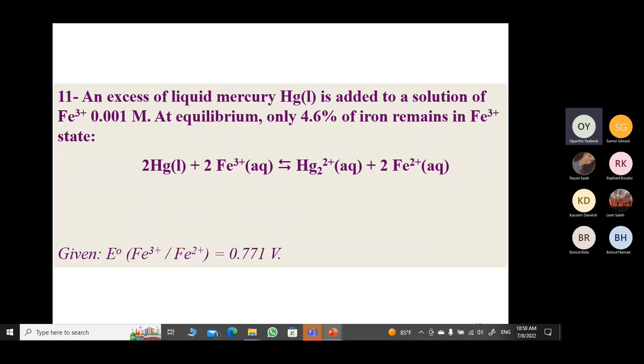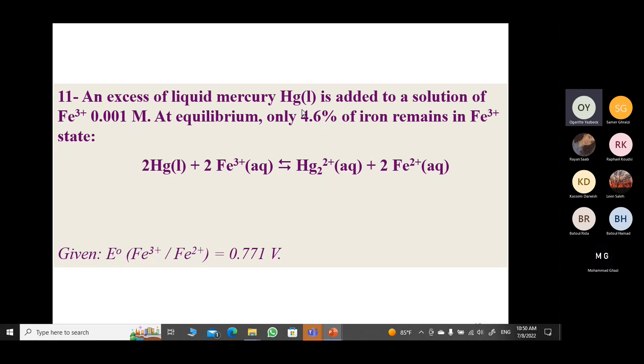At equilibrium, only 4.6% of iron remains. So what did they give us, again, similar to what we just solved? What are we giving? A 4.6% iron remains at equilibrium. Yani, what are they giving me? The concentration of Fe³⁺ at equilibrium.